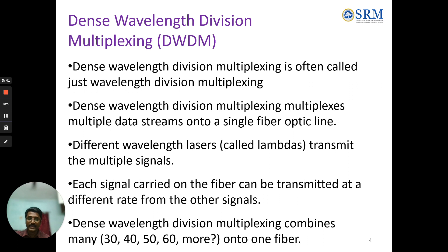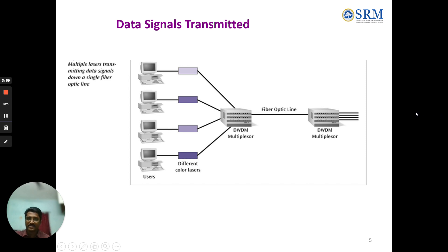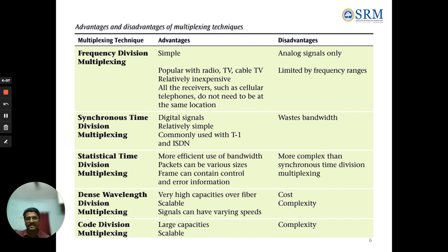Multiple users with multiple lasers transmit data signals down a single fiber optic line. A table showing the advantages and disadvantages of various multiplexing techniques is presented here.